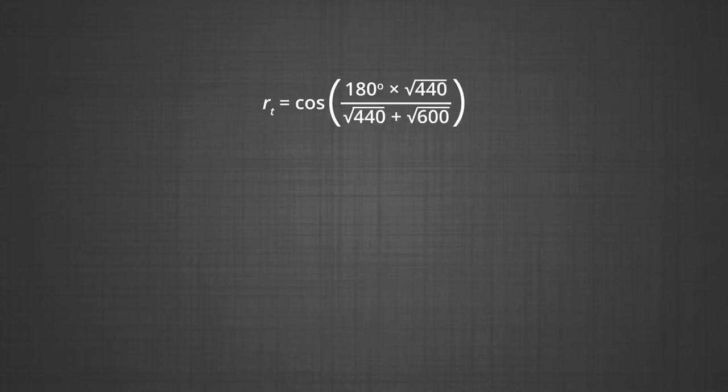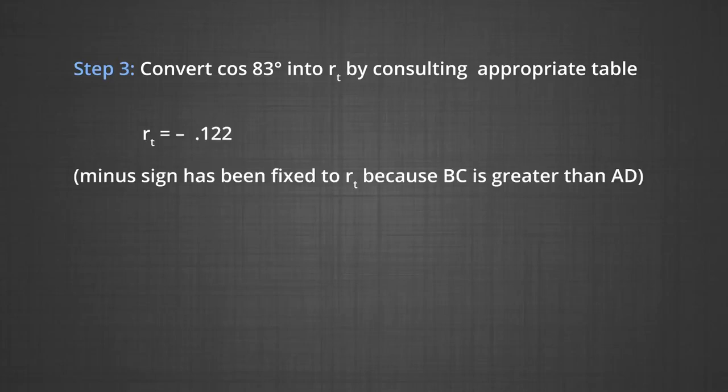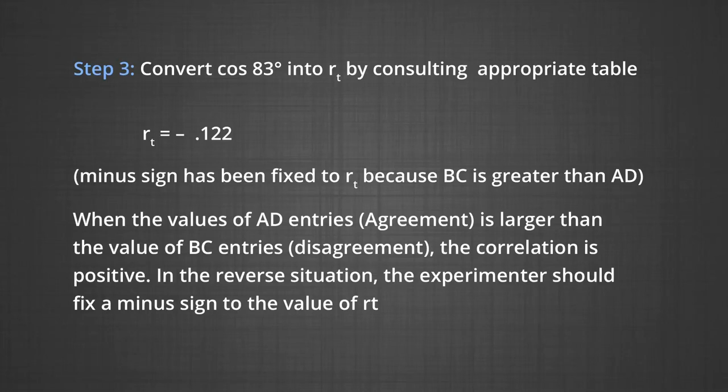Substituting the values in the formula, we get R_tet = cos(180° × √440 / (√440 + √600)) = cos(180° × 20.98 / (20.98 + 24.49)) = cos(180° × 20.98 / 45.47) = cos(83°). Converting cos(83°) to R_t by consulting the table, we get R_t = -0.122. When the values of AD (entries agreement) is larger and BC (entries disagreement), the correlation is positive. In the reverse situation, the experimenter should fix a minus sign to the value of R tetrachoric.